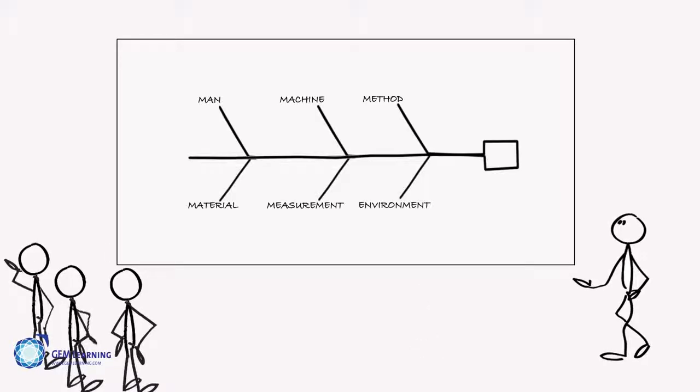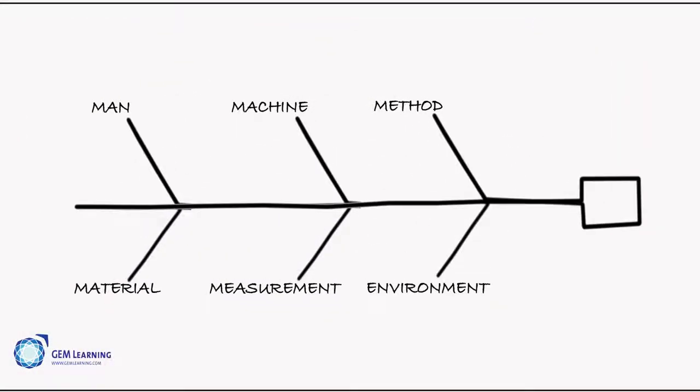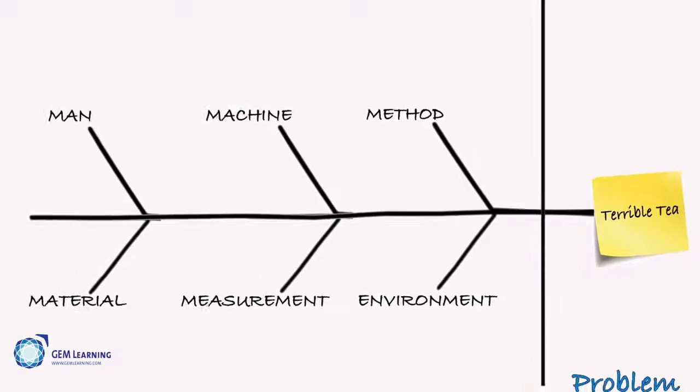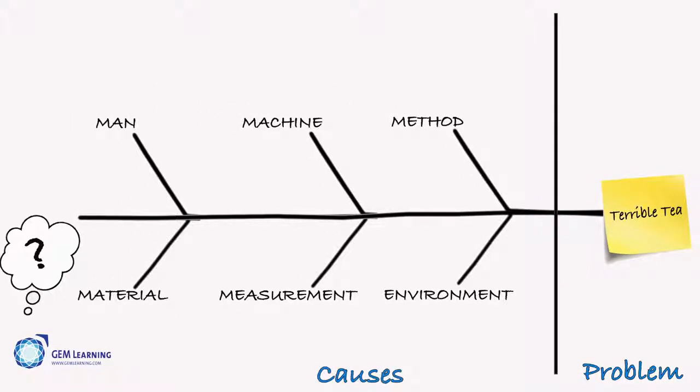Just draw a fish skeleton on a chart or board. Write the problem in the head of the fish and start brainstorming causes. Why would this problem happen?